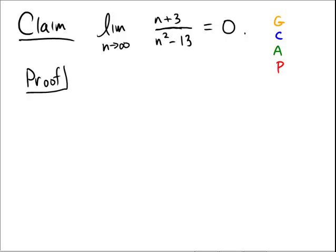Okay, for this problem, we have a claim that the limit as n goes towards infinity of n plus 3 over n squared minus 13 is equal to 0.